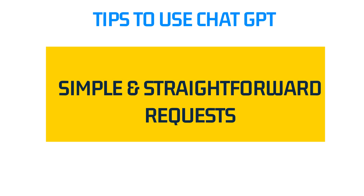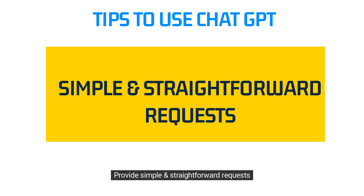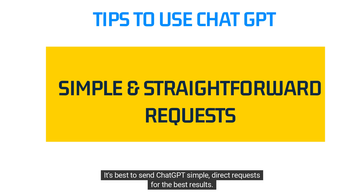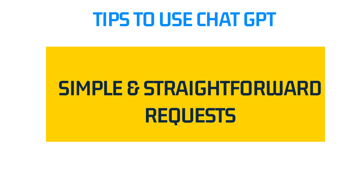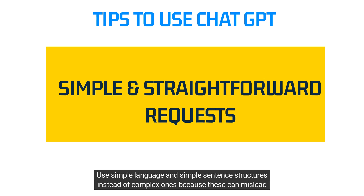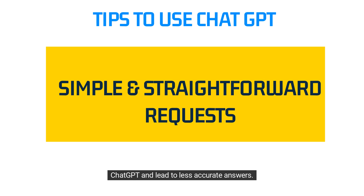Fifth, provide simple and straightforward requests. It's best to send ChatGPT simple, direct requests for the best results. Use simple language and simple sentence structures instead of complex ones, because complex requests can mislead ChatGPT and lead to less accurate answers.